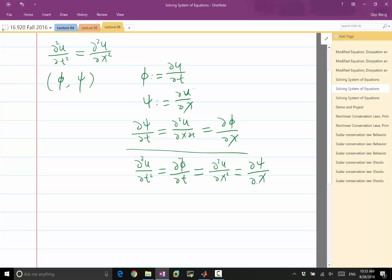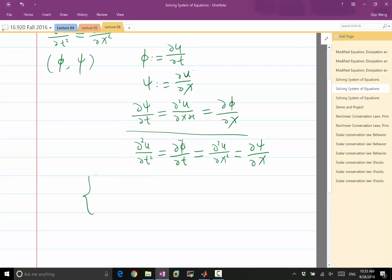All right, so we have these two equations, and we can write them down together. Partial psi partial t is partial phi partial x. Partial phi partial t is equal to partial psi partial x. What an interesting system.